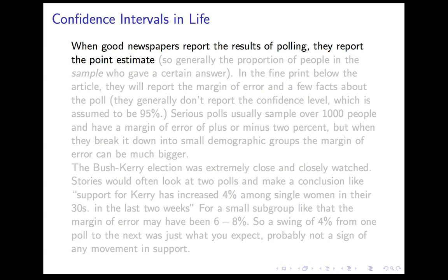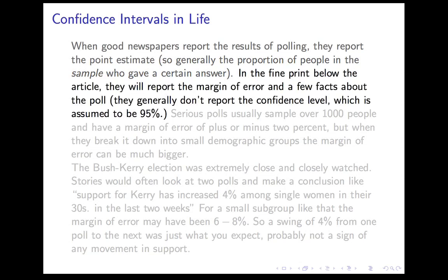Confidence intervals are something you have seen in your day-to-day life, although often they're a little bit hidden. If a good newspaper reports the result of polling, they will generally give you the point estimate up front — the proportion of people in the sample who gave a certain answer. If they say 42% of Americans think Obama is doing a good job, what they mean is 42% of their sample literally thought so. In the fine print they will report the margin of error. They generally don't report the confidence level because it's assumed to be 95%.